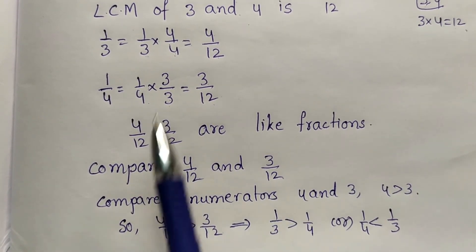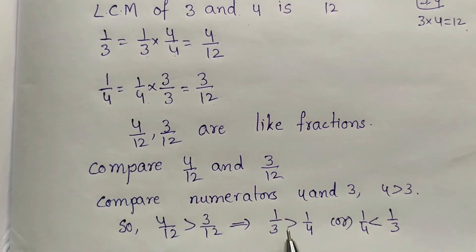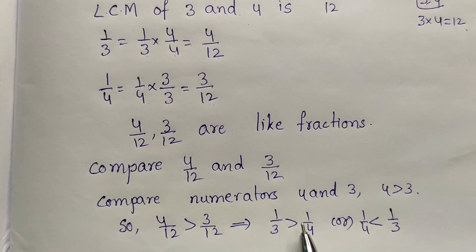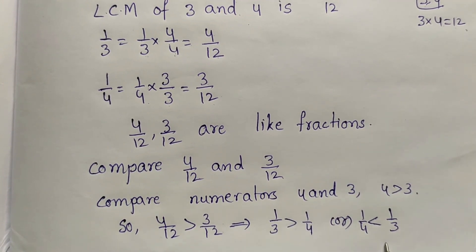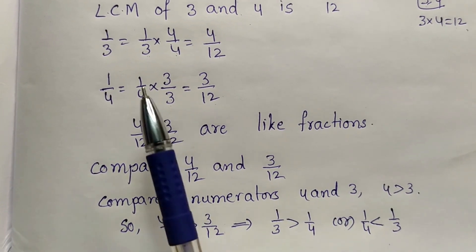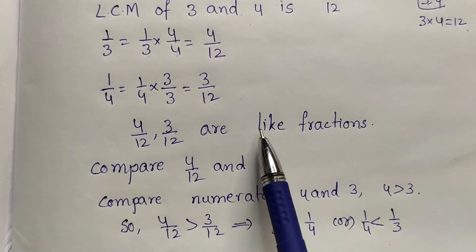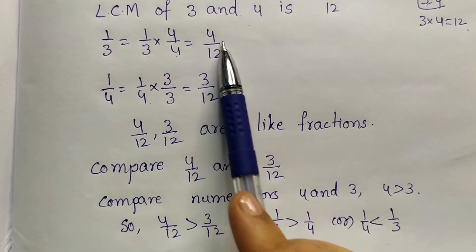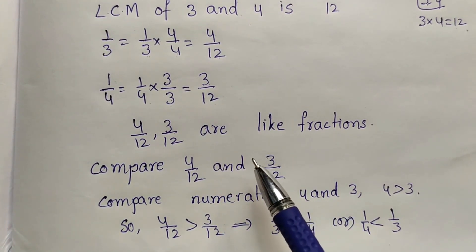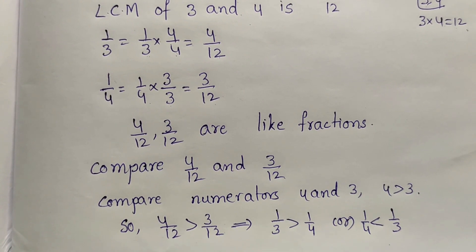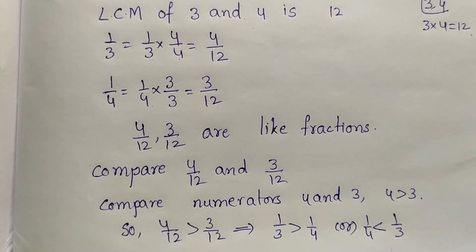4 by 12 means 1 by 3. So 1 by 3 is greater than 3 by 12, which means 1 by 4. So 1 by 3 is greater than 1 by 4, or 1 by 4 is less than 1 by 3. We convert them into like fractions, these become equivalent fractions, and then compare — so 1 by 4 is less than 1 by 3.